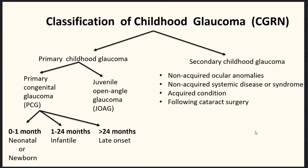CGR classification of childhood glaucoma: childhood glaucoma is classified into primary and secondary. Primary childhood glaucoma is further classified into primary congenital glaucoma and juvenile open-angle glaucoma. Primary congenital glaucoma detected from 0 to 1 month of age is called neonatal or newborn glaucoma; 1 to 24 months is called infantile glaucoma; beyond 24 months is called late-onset childhood glaucoma. Secondary childhood glaucoma is classified based on association with non-acquired ocular anomalies, non-acquired systemic disease or syndrome, acquired conditions, and glaucoma following cataract surgery.